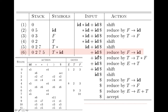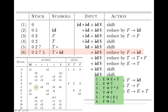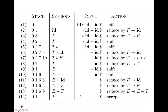Now it is 5 and plus. 5 and plus represents reduce by rule number 6, which is f gives id. So id gets replaced by f, and since id is a single symbol, 5 gets removed from the top of the stack. Now there is 7 at the top, so we refer to 7 and f, which gives state 10. So 10 gets pushed onto the stack.